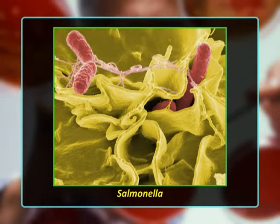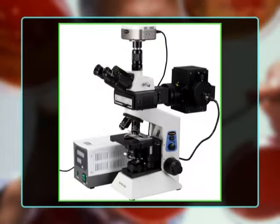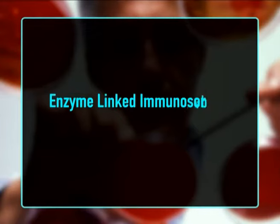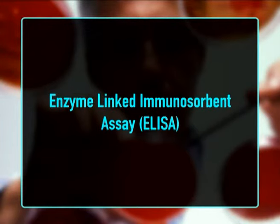Immunofluorescence: specific immunofluorescence-conjugated antibodies directed against somatic or flagellar antigens of a pathogen are mixed with an enriched medium suspected to contain the specific pathogen, such as Salmonella, on a glass slide. Following incubation and removal of reagents, the slide is examined under a fluorescence microscope for cells showing fluorescence on the cell wall, flagella, or both.